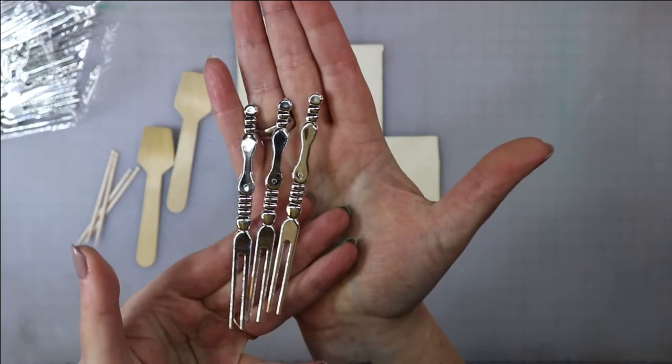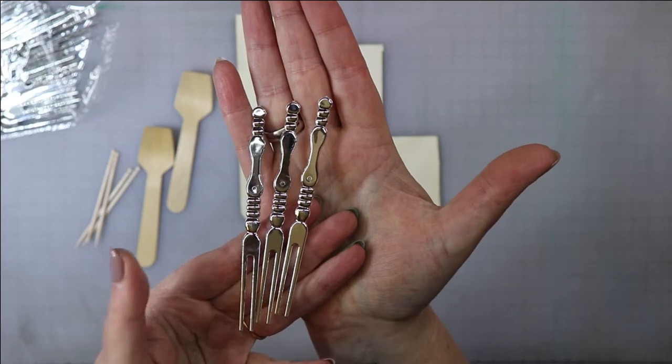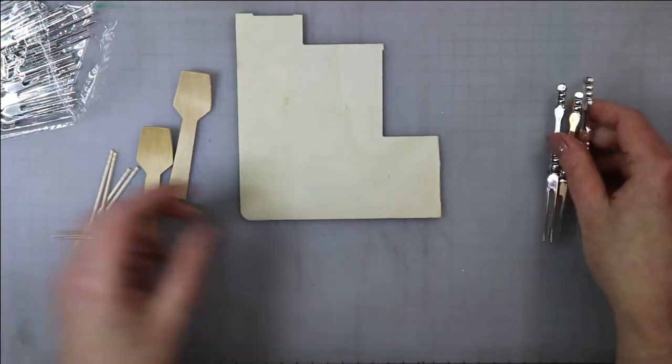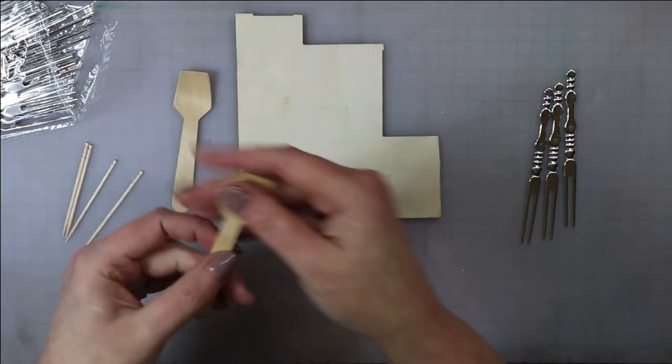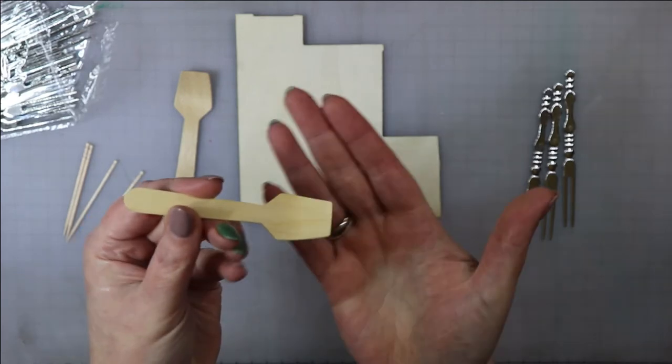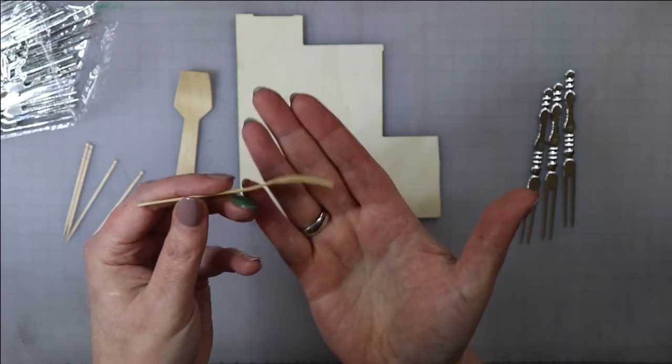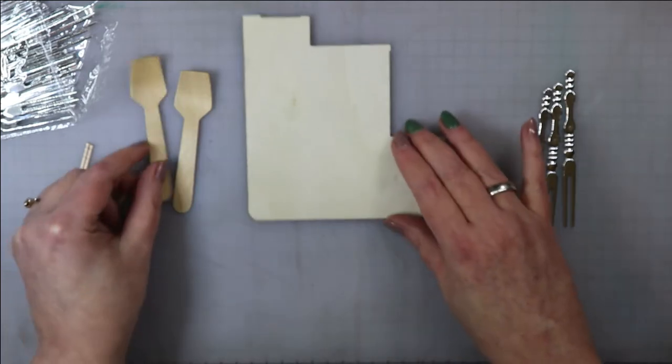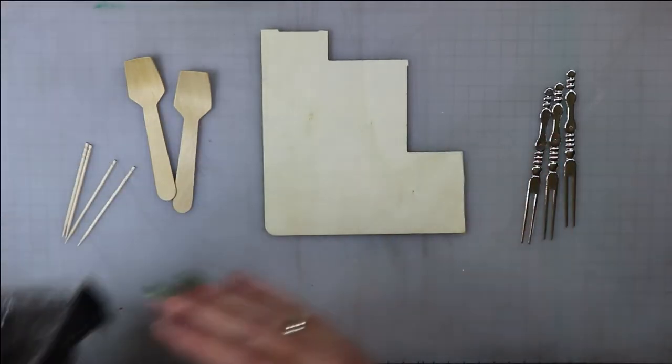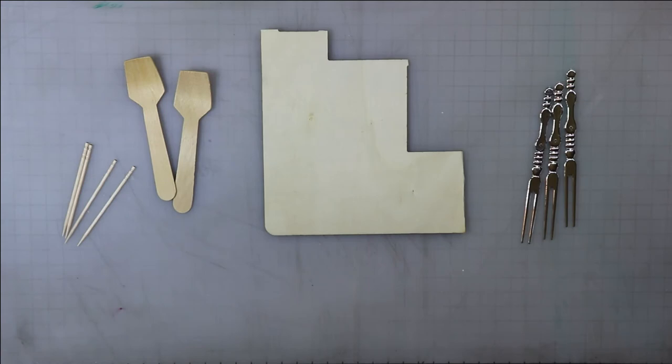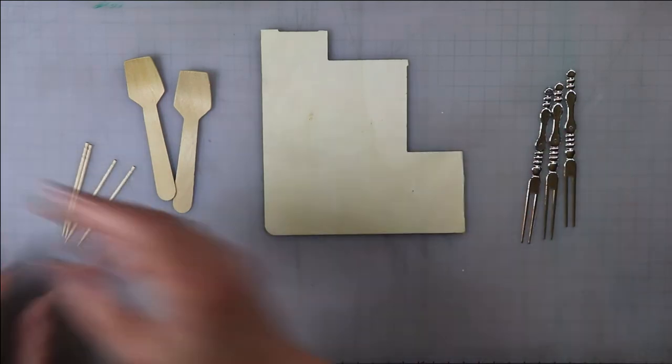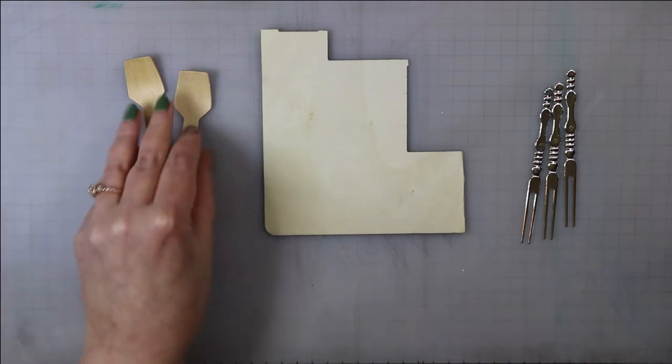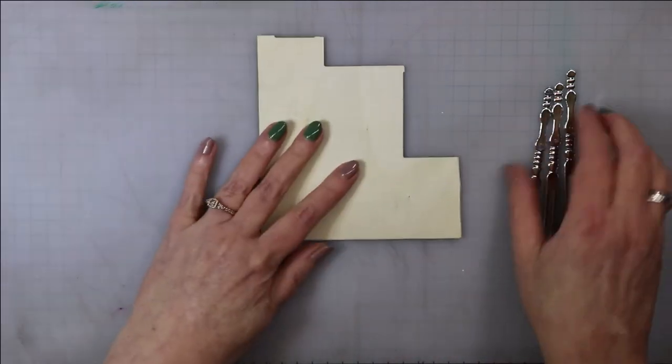So I laid the items that I was going to be using or thought I would need to make the chair out on the table. I'm using a bit of scrap balsa, some plastic cocktail forks, some fancy toothpicks, and some wooden spoons. I will provide links to all my materials in the description box or in the blog post.